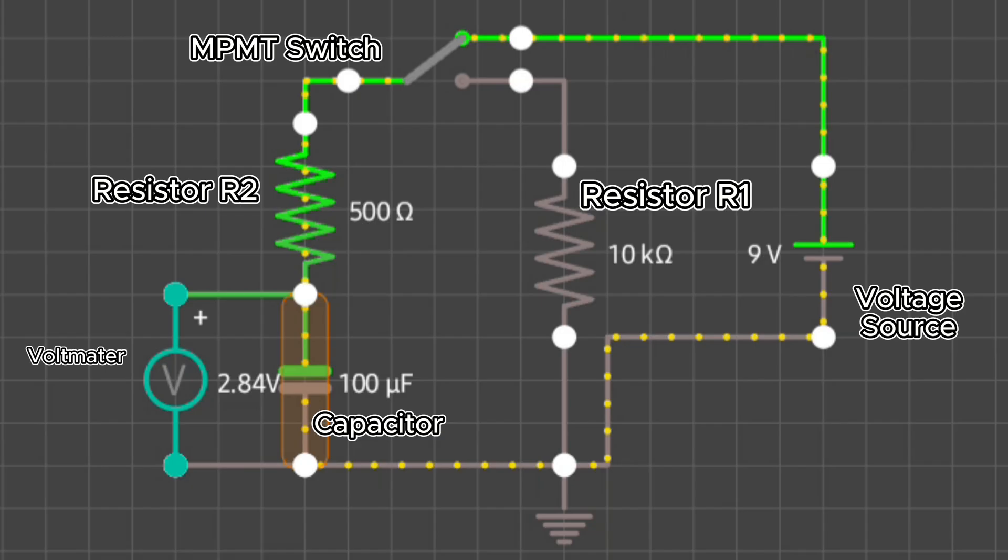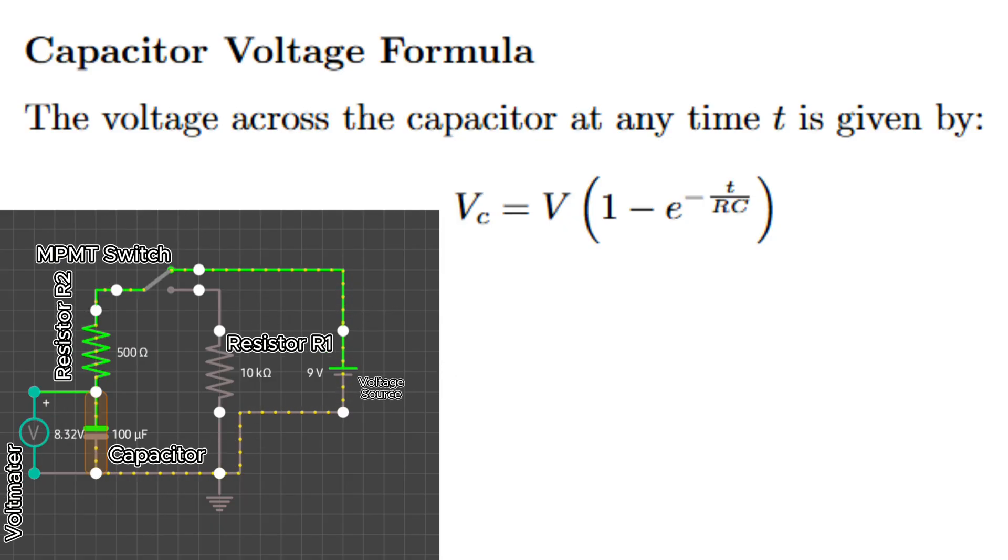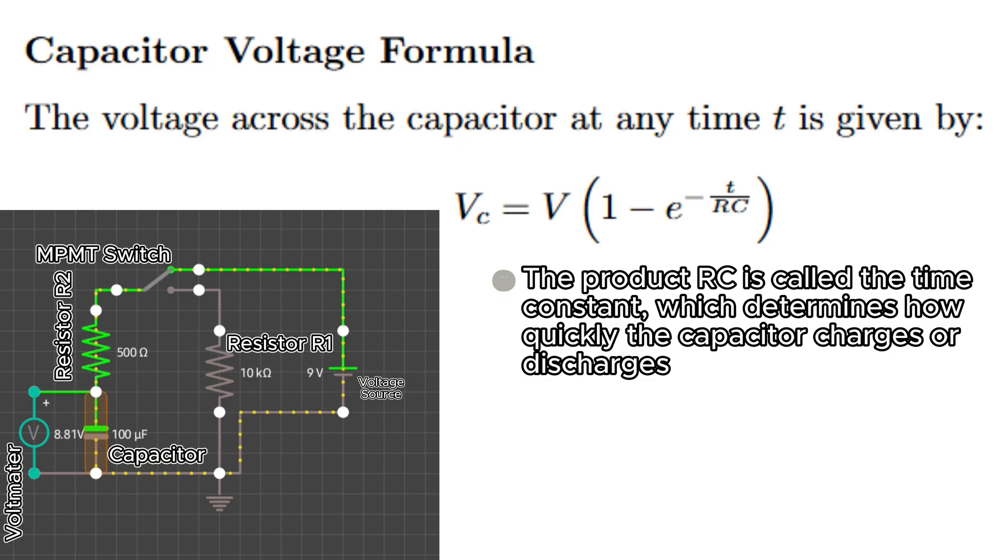The voltage across the capacitor at any time T is given by this formula: Vc equals the input voltage times 1 minus e to the power of negative t over RC. The product RC is called the time constant, which determines how quickly the capacitor charges or discharges.